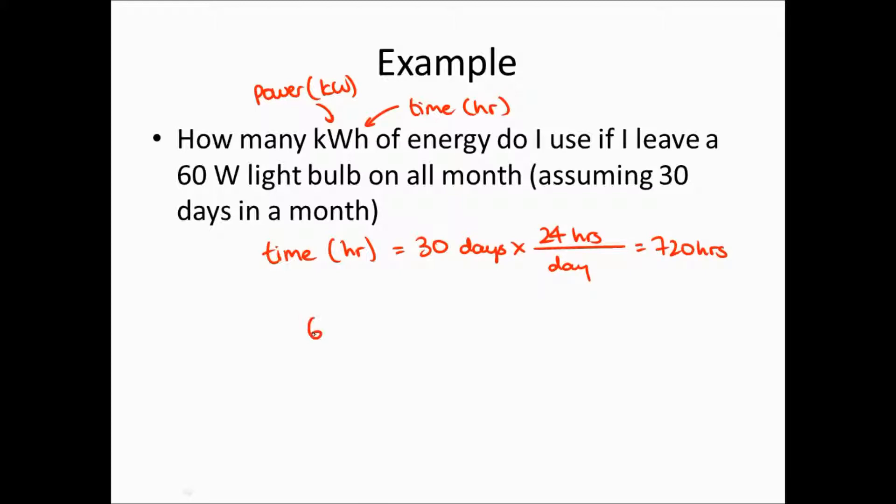Now, 60 watts and I divide this by 1000 to convert from watts to kilowatts to get the power to be 0.060 kilowatts. Therefore, the amount of energy is equal to 0.060 kilowatts times 720 hours. And that comes out to be 43 kilowatt hours.